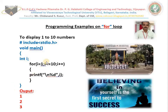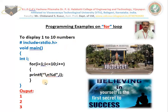Hello, dear students. In today's class, I teach you some more programming examples on for loop. In the last class, I taught what is for. For is one of the counter controlled loops. It repeats the given block of statements repeatedly. If the given condition is true, it repeats. Whenever the condition becomes false, it will not repeat. That is what we studied in the last class.